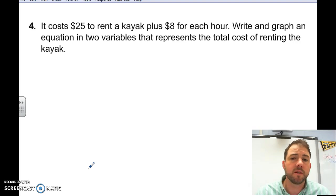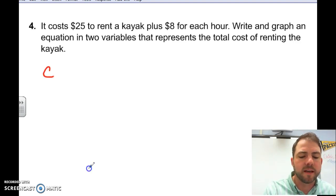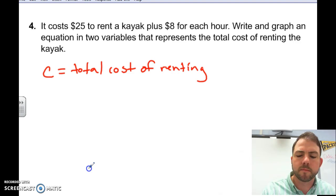So, what is the first variable that we need to define? Well, I think we need to define the total cost of renting a kayak. That should be a variable because that's what we're trying to figure out in the problem. So, I'm going to let C represent that. C equals total cost of renting a kayak.